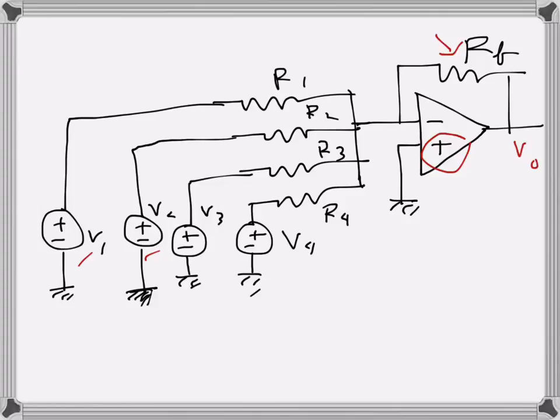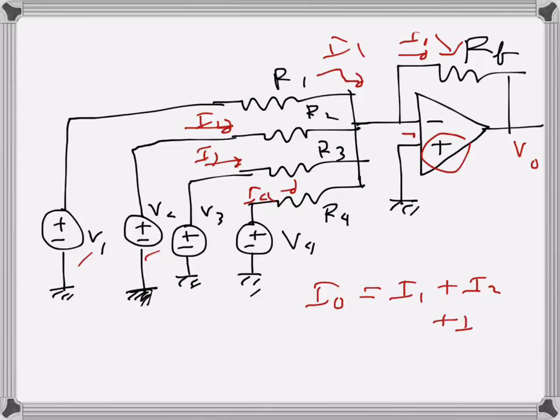If we analyze the circuit, we know that there won't be any current flowing. We are considering an ideal op-amp, so no current will flow into the inputs. One current is here, let's call it I1, then I2 here, I3 here, and I4 there. This is the output current, which is I0. So I0 will be the sum of the four currents: I1 plus I2 plus I3 plus I4.